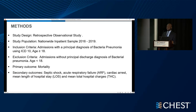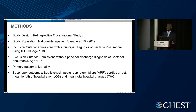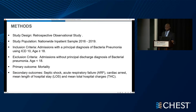Our study design is a retrospective observational study. We used the National Inpatient Sample 2016 to 2019. Our inclusion criteria is any admission with a principal diagnosis of bacterial pneumonia using the ICD-10 code with a previously validated study, with age greater than 18 and above. Our exclusion criteria is any patient not admitted with a principal diagnosis of bacterial pneumonia, or age less than 18. The primary outcome was mortality; secondary outcomes included septic shock, acute respiratory failure, cardiac arrest, mean length of hospital stay, and total hospital charge.